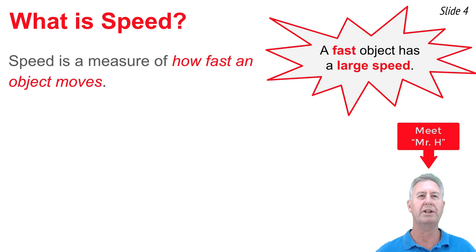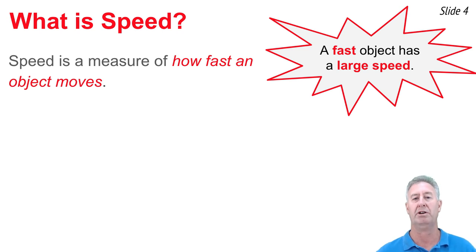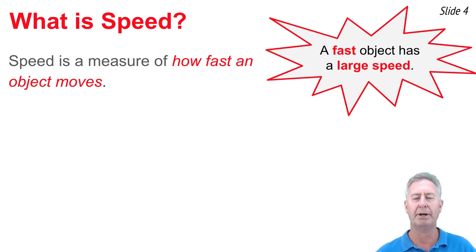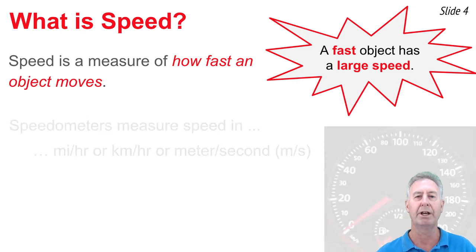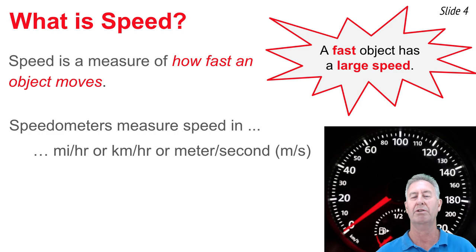We begin with: what is speed? Speed refers to how fast an object is moving — a pretty simple definition. When you think about it, the first thing that probably comes to mind is a speedometer. A speedometer measures your speed with units of miles per hour, kilometers per hour, or meters per second. The unit — kilometer, mile, or meter — is a distance; per hour or seconds is a time. So speed tells us the amount of distance traveled per unit of time. That's our best working definition for speed.